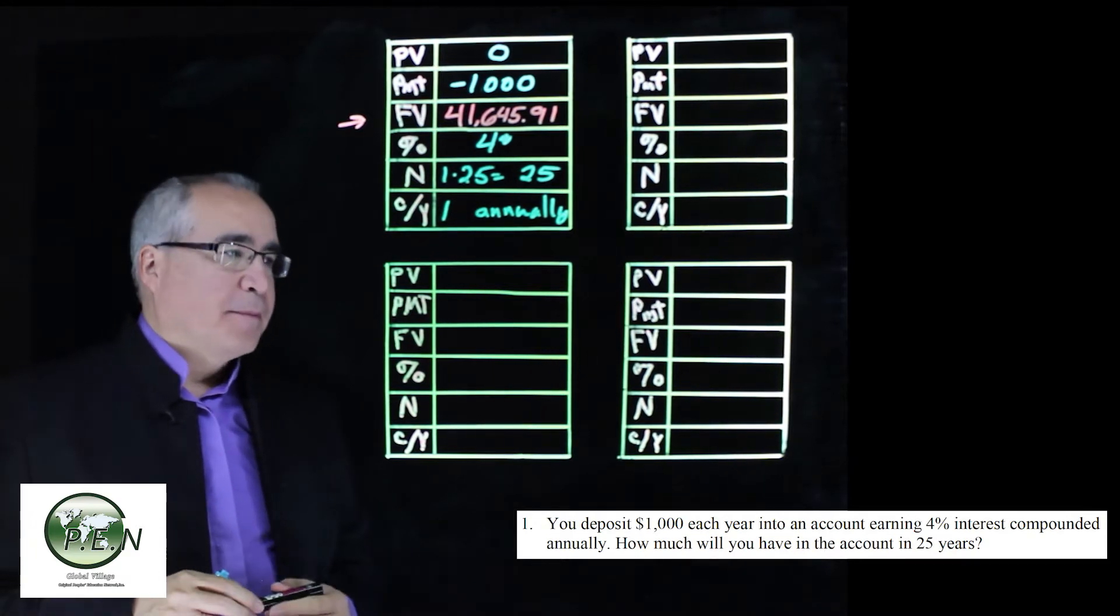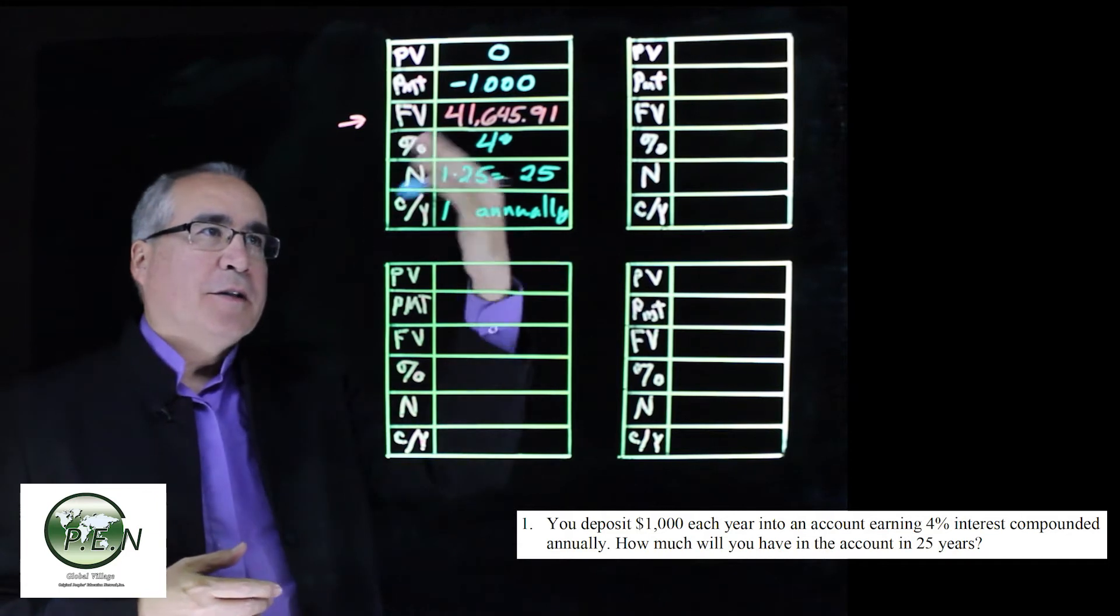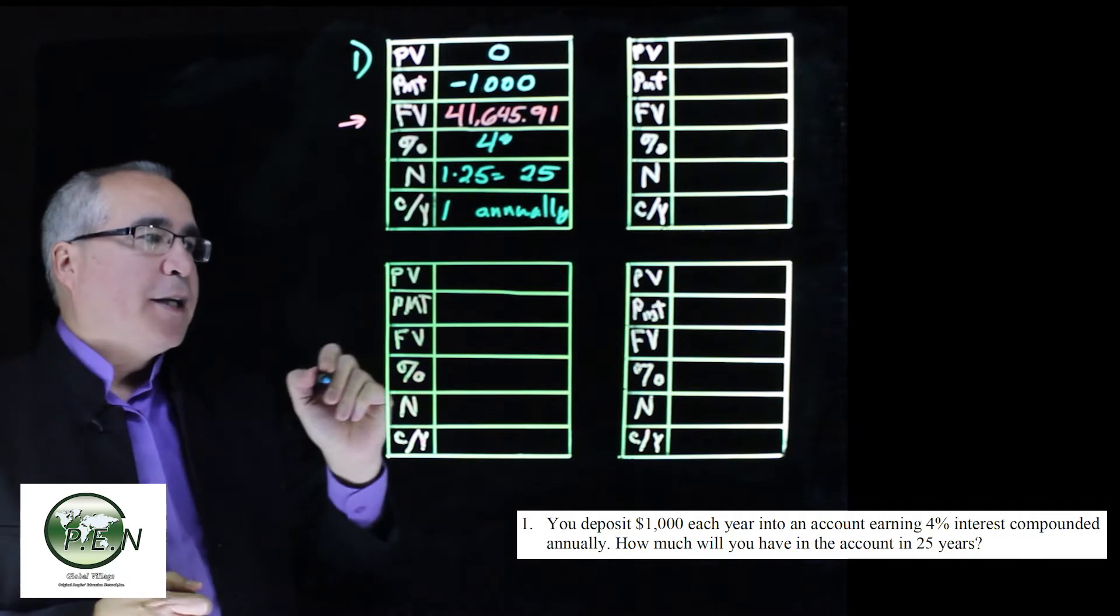So that's how we do an annuity with a regular deposit into an account that pays out. That was question number one.